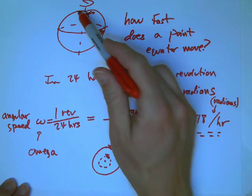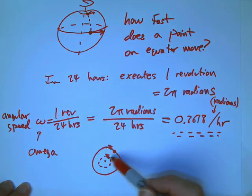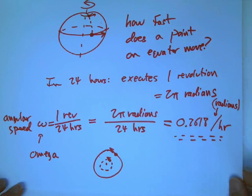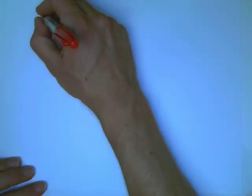That's something that's very important. Angular speed is the thing that's the same on any kind of rigid body that's rotating around, no matter how far you are from the center of rotation.